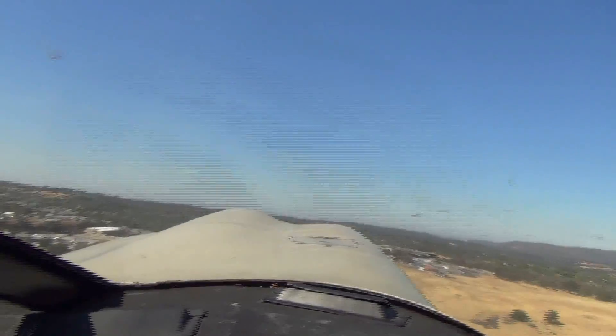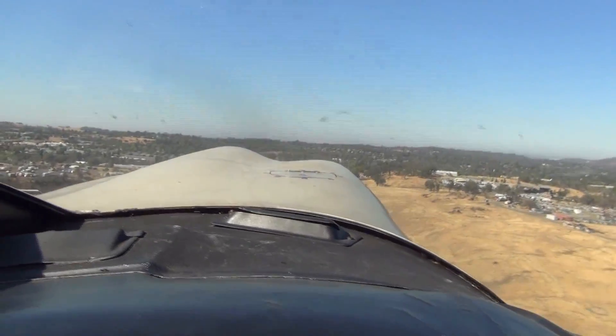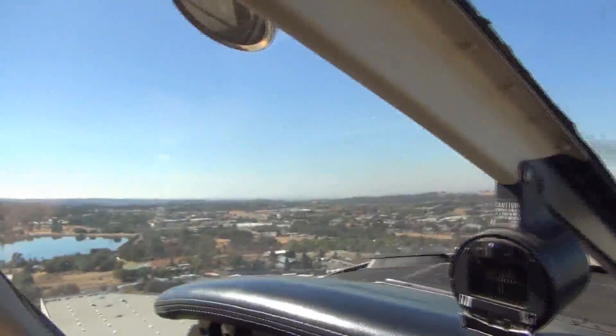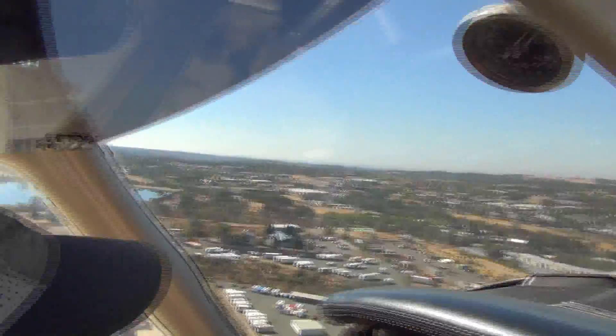Auburn traffic, Cessna 992 taking active runway 25 straight out departure, Auburn. Metry traffic, RV 282 overhead.